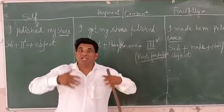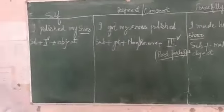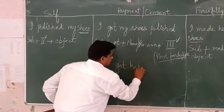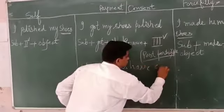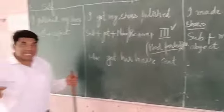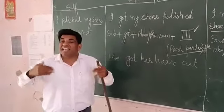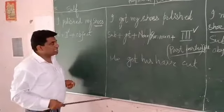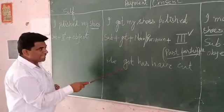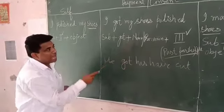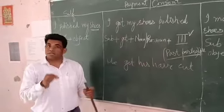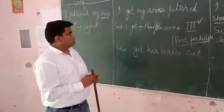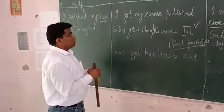Let me give more examples. 'He got his hair cut' — it means he didn't cut his hair himself; he got it cut by someone else, like a barber. The structure is the same: subject + 'got' + noun + past participle. Note that the first, second, and third form of 'cut' are all the same.